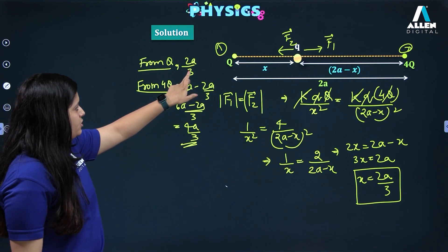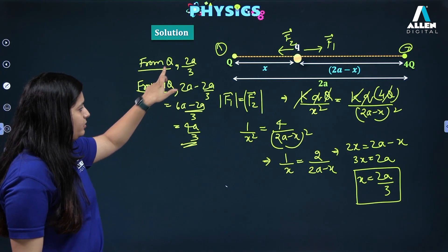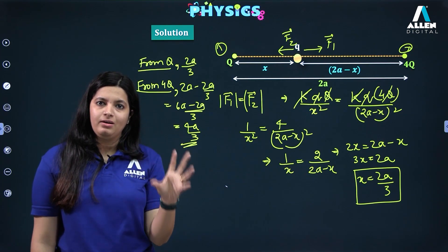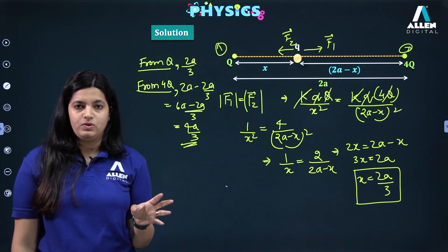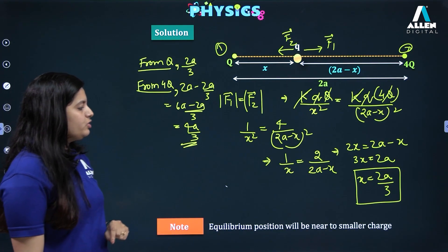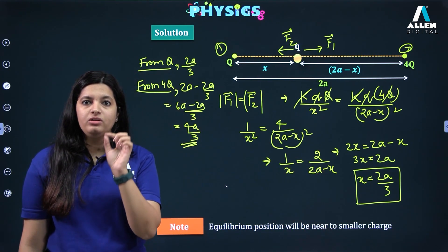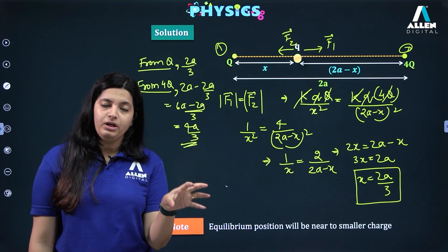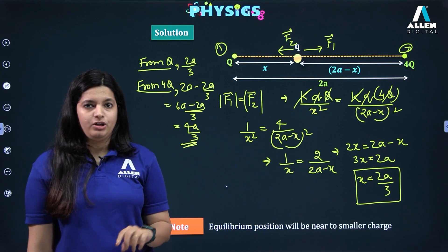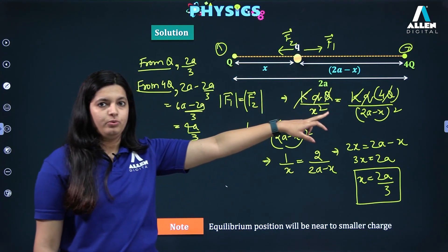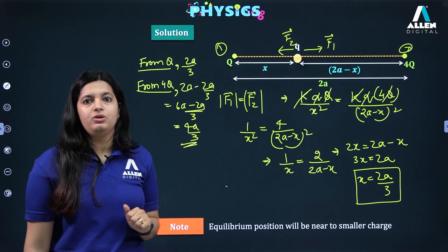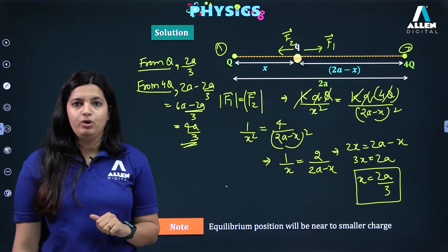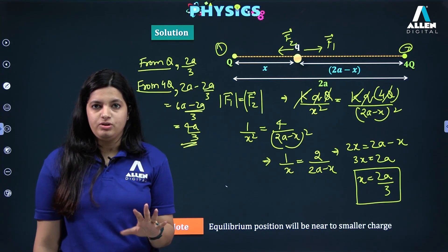Notice that the equilibrium point is at 2a/3 from the smaller magnitude charge Q and 4a/3 from the larger magnitude charge 4Q. The key conclusion is: the equilibrium point always lies closer to the charge of lesser magnitude. This rule holds even for unlike charges. Do not look at the sign — always consider the magnitude. Whichever charge has lesser magnitude, the equilibrium point will be near to it.